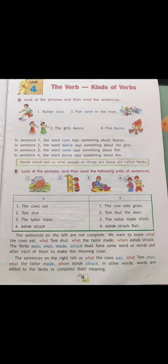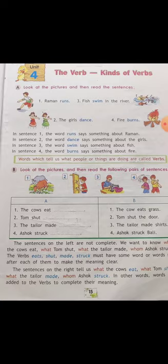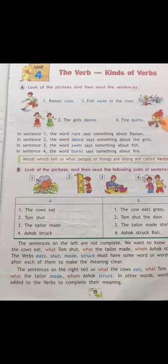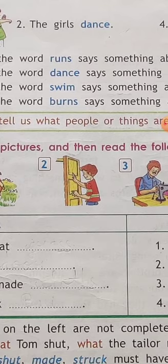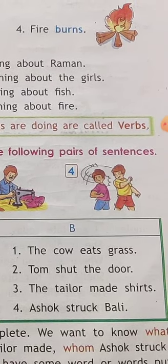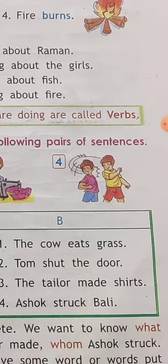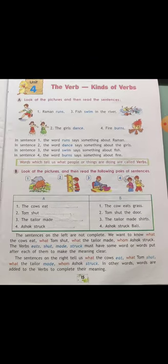Look at the pictures and read the following pairs of sentences. The cows eat grass — here we can see cows eating grass, so 'eat' shows us the action. Tom shut the door. The tailor made shirts. Ashok struck Bali — Ashok hit Bali, so 'struck' shows the action.